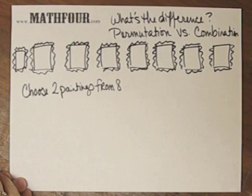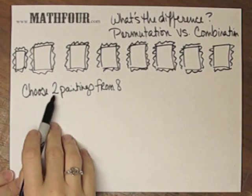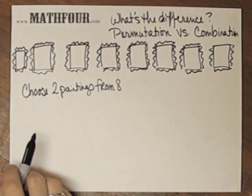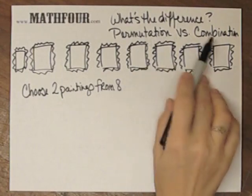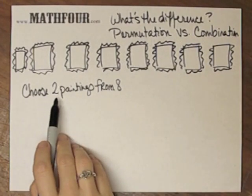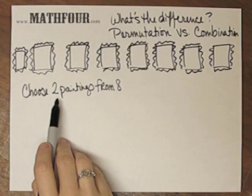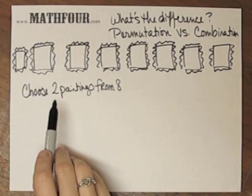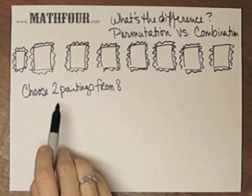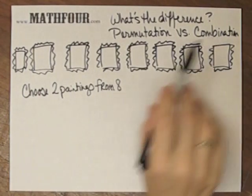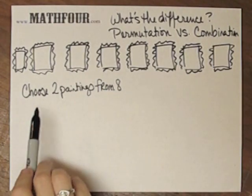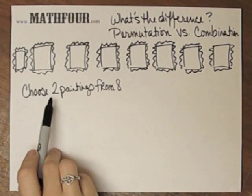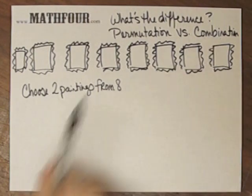I'm going to choose two of these paintings. The big question before you determine whether it's permutation or combination is what are you doing with these two paintings? If you're just choosing them to go home with you or to be given as a gift, then it's a combination. As it stands, we can't determine if there is a difference, so you automatically choose combination.